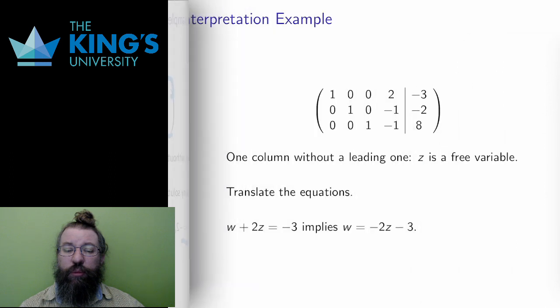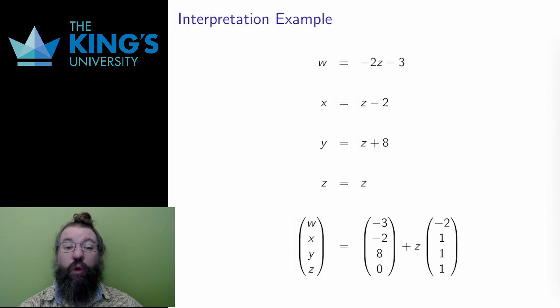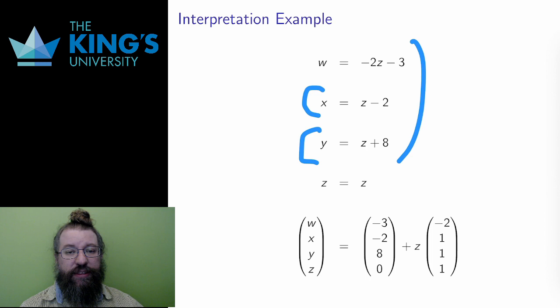Here is something similar again, but the z column now has non-zero entries. This is still in reduced row echelon form. Each row has a leading one, and the leading ones are in columns of zeros. However, now I have to translate each row. The first row translates to w plus two z equals negative three. If I solve for w, this is w equals negative two z minus three. In the same way, I can translate all three rows and move the z terms over, and I get three equations this way. Each equation relates w, x, and y to z, and z is the free parameter.